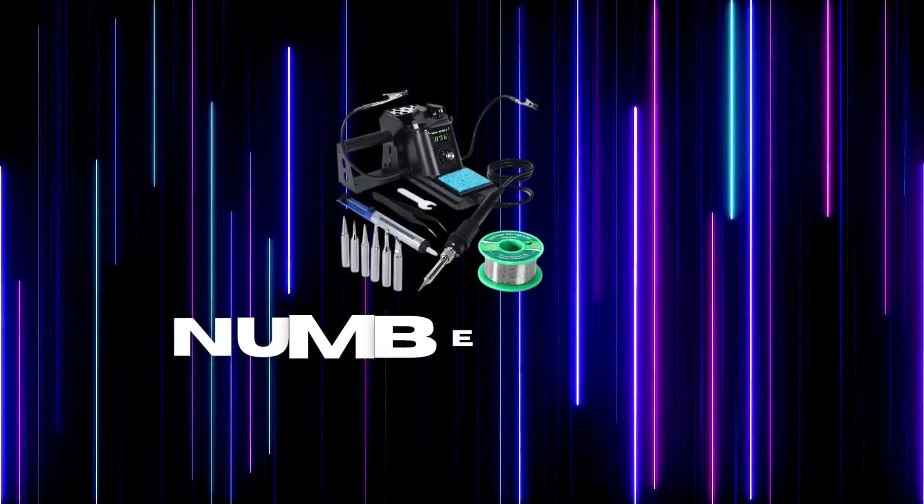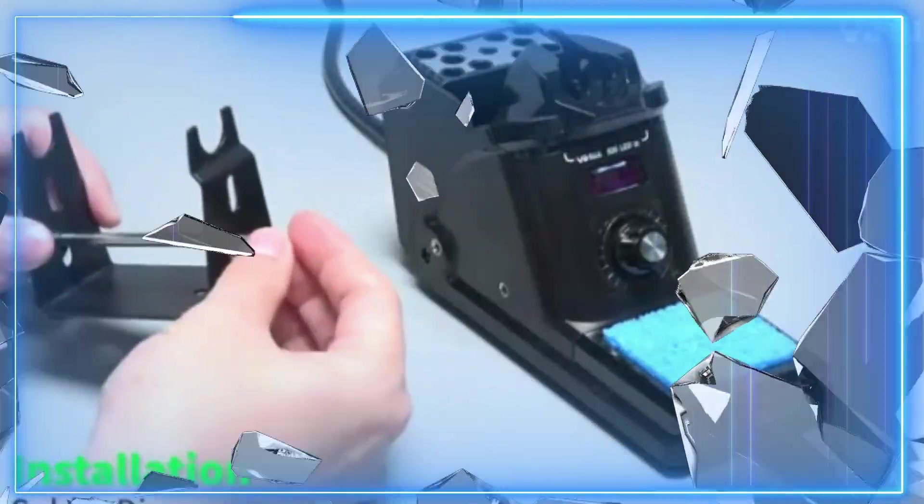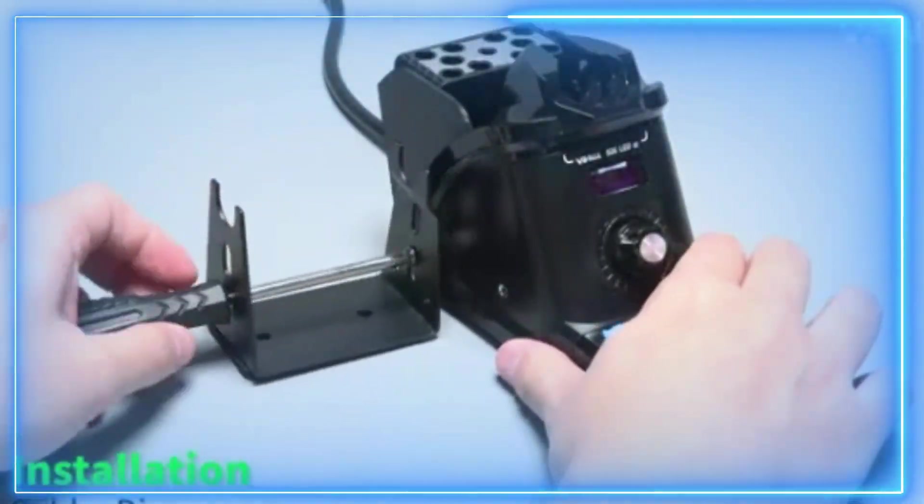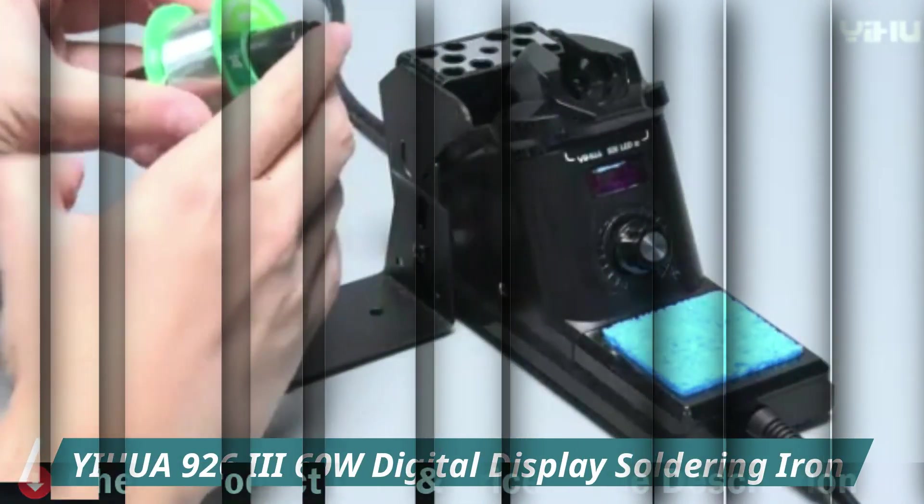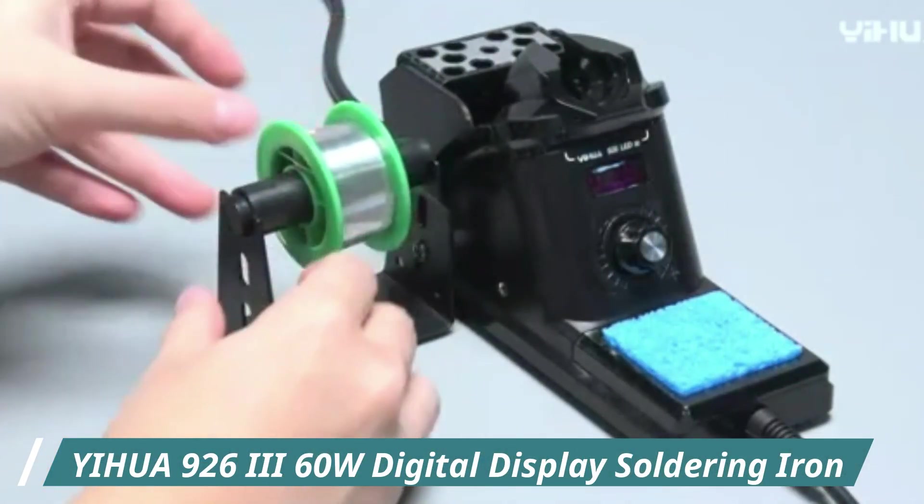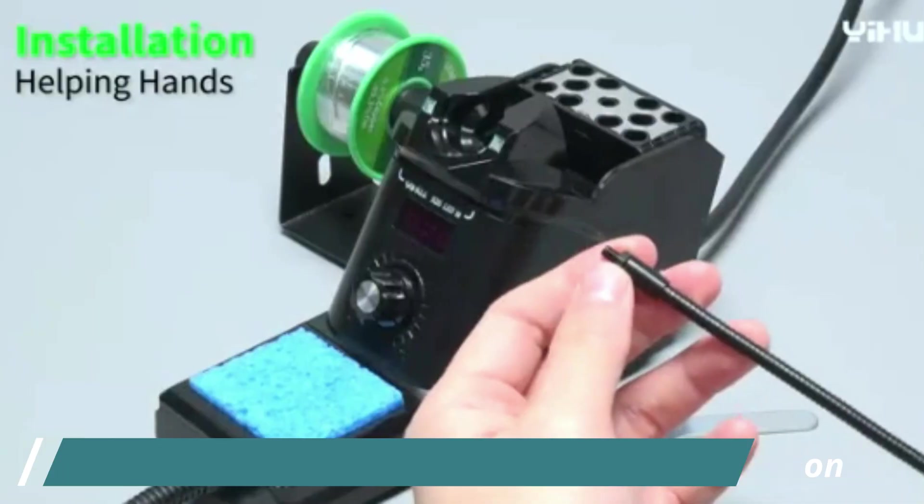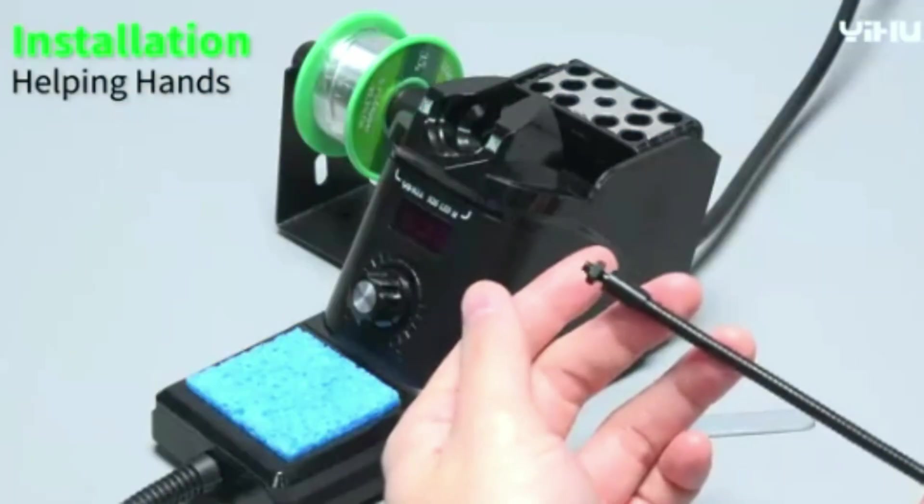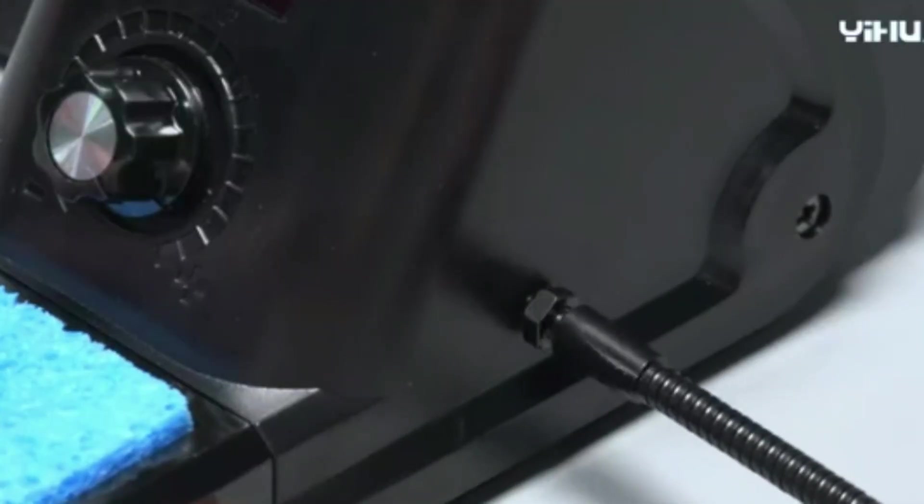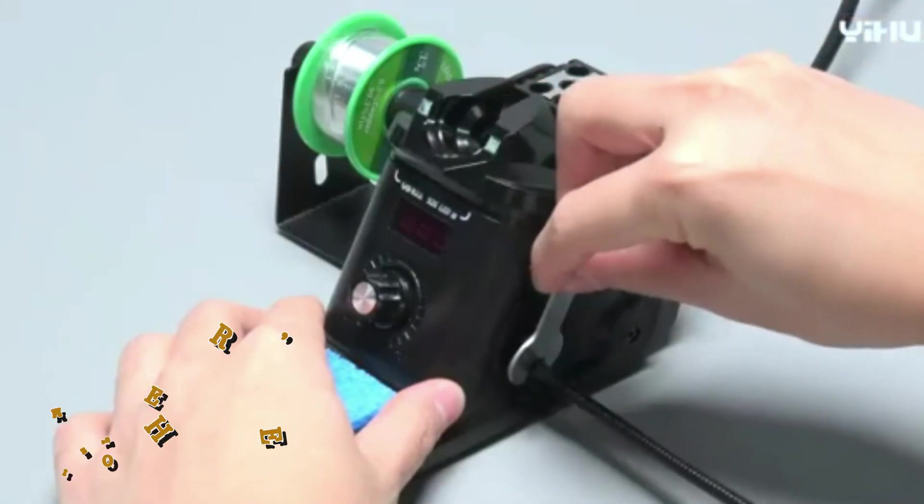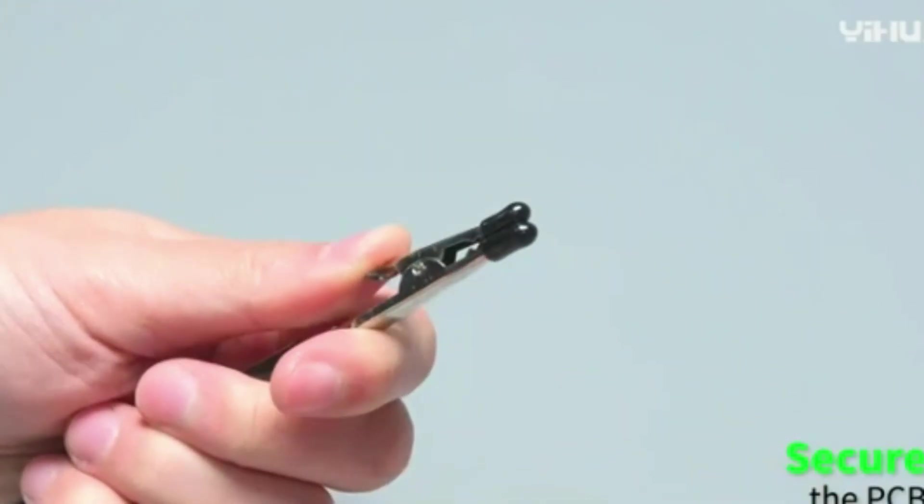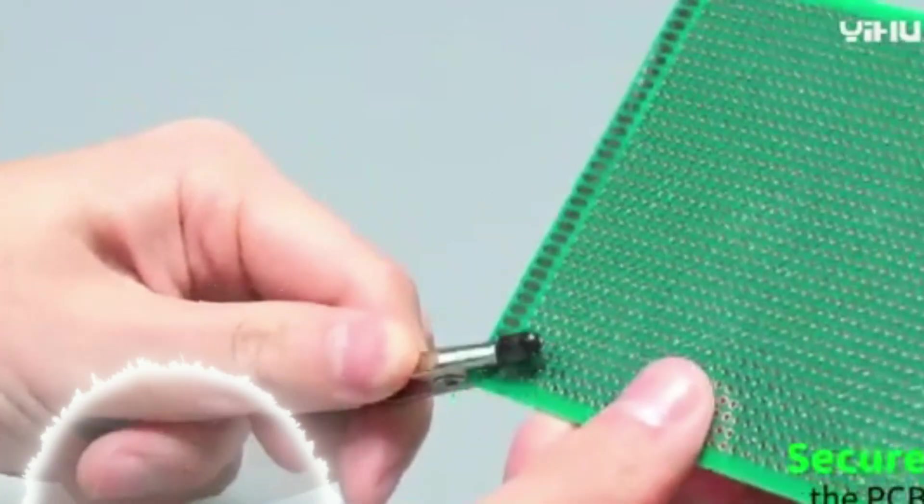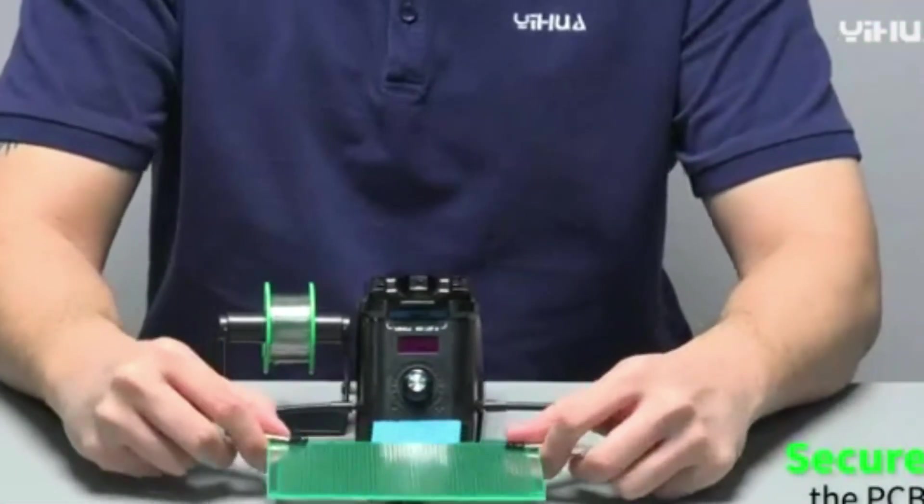Our second best soldering iron for electronics is Yihua 9263 360-watt digital display soldering iron station kit. Whether you're just getting into soldering or you're looking to upgrade from a basic iron, the Yihua 9263 soldering station kit is a smart, reliable choice. It offers great performance, a full set of tools, and thoughtful features, all at a very reasonable price.